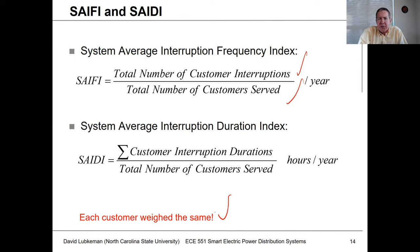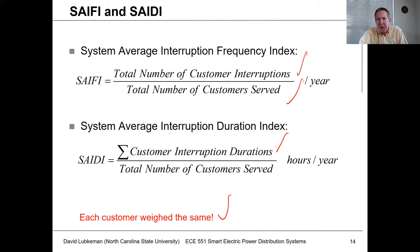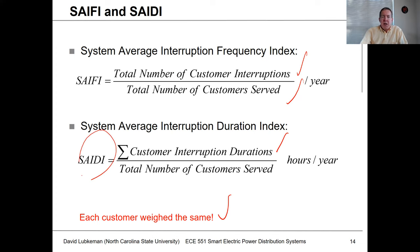The key numbers we'll use are SAIFI and SAIDI. SAIFI is the number of interruptions you're going to have per year — you take the total number of customer interruptions and divide by the total number of customers served, weighting every customer the same regardless of size. SAIDI is the number of hours or minutes you're out per year — if you sum up all customer interruption durations for sustained interruptions (typically longer than five minutes) and normalize by the number of customers served, you get the SAIDI number.